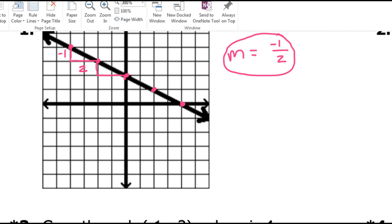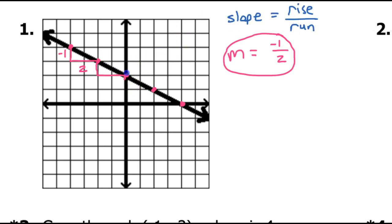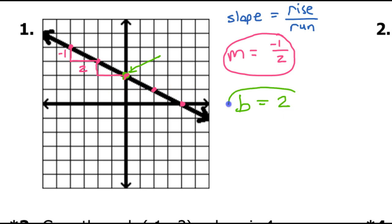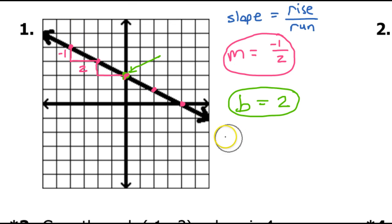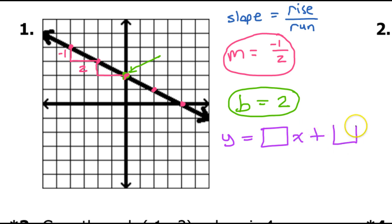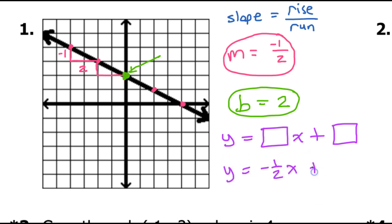The next thing we need is the y-intercept. The y-intercept is simply going to be the point where the line crosses the y-axis. That tells me that the b value is going to be 2 because the line crosses the y-axis at positive 2. So the b value is 2. When we look at the model y equals mx plus b, the m goes here and the b goes here. So I'm going to have y is equal to negative 1 half x plus 2. That will be the equation of the line.